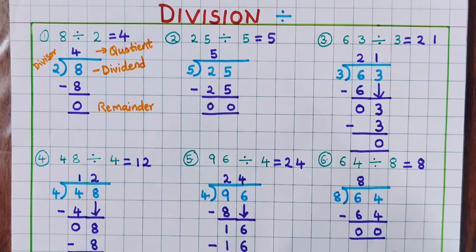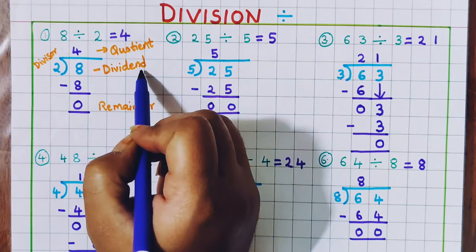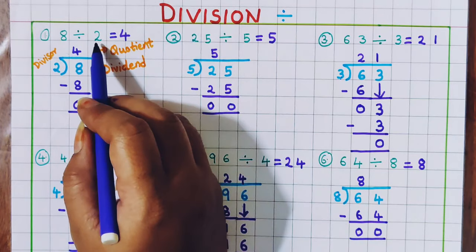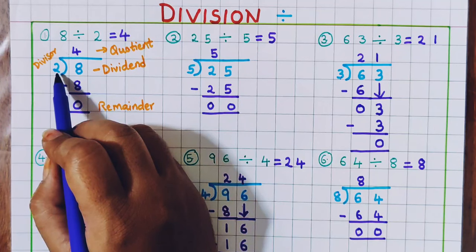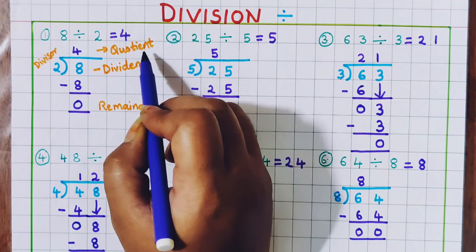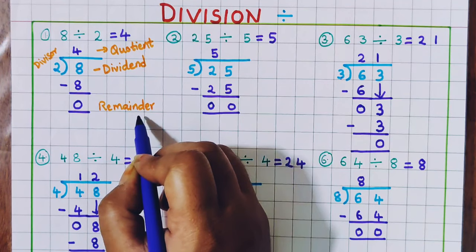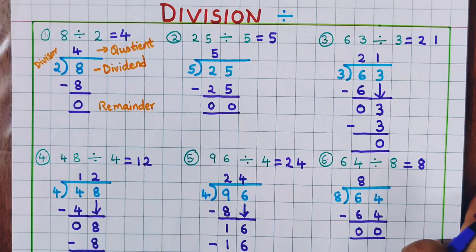I hope the division is clear to everyone. Remember: the first number is called the dividend — that is the number which we are going to divide. The number with which we divide is called the divisor. The number we get in the result is called the quotient, and the number remaining at the bottom is called the remainder. I hope division is clear to you. If you enjoyed this video, do give it a like, share this video, and subscribe to our channel. Bye bye.